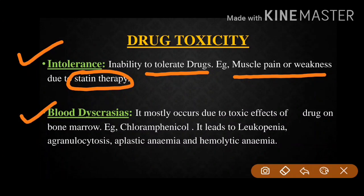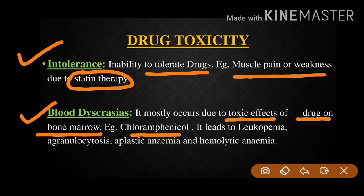Second is blood dyscrasias, meaning blood disorder. It mostly occurs due to toxic effects of the drug on bone marrow. An example of the drug is chloramphenicol. Chloramphenicol leads to leukopenia, agranulocytosis, aplastic anemia, and hemolytic anemia. Leukopenia means a decrease in the number of WBCs, that is white blood cells.